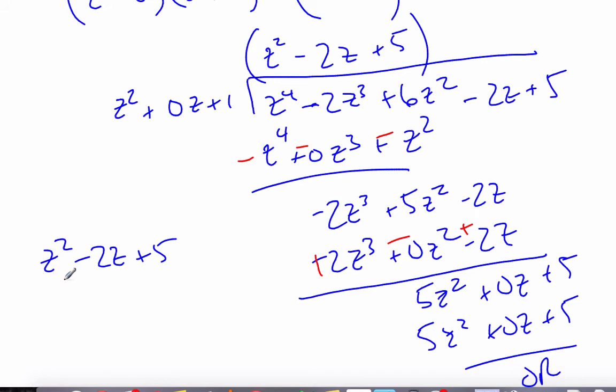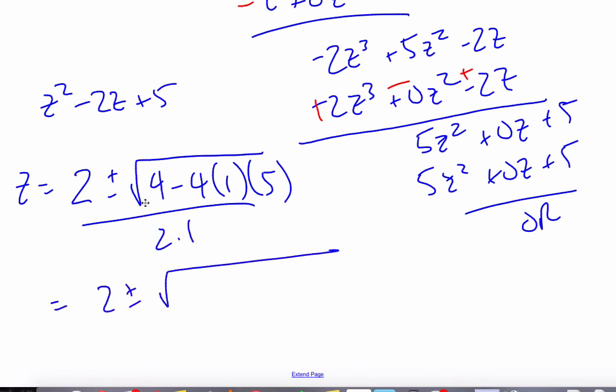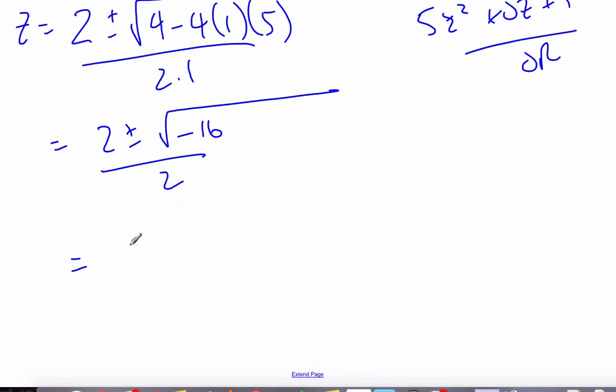In order to find the solutions to this scenario, I can factor it if it factors, or I can use quadratic formula. In this case, I'm going to have to use quadratic formula since it doesn't factor nicely. So it's minus b plus or minus the square root of b squared minus 4ac over 2a. So 2 plus or minus 4 minus 20 is negative 16 over 2, which is 2 plus or minus 4i over 2, which is 1 plus or minus 2i.